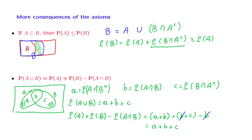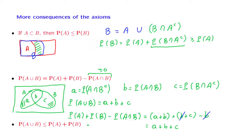One particular consequence of the equality we derived is the following. Since the subtracted term is always non-negative, the probability of A union B is always less than or equal to the probability of A plus the probability of B. This inequality is quite useful whenever we want to argue that a certain probability is smaller than something, and it has a name: it's called the union bound.